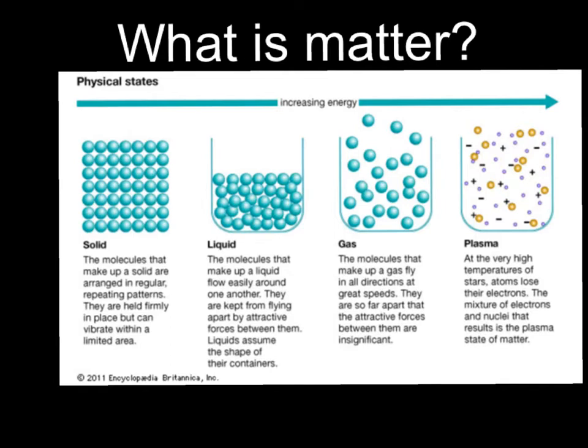Solids are held firmly in place and they vibrate in place. Solids have a fixed shape and a fixed volume. Liquids have molecules that have a little bit of extra space in between. They're not as compact and they're definitely not in a repeating regular pattern like solids. Liquids have a definite volume but they do not have a definite shape. Instead, they take the shape of their container. Gases have lots of empty space in between them and they fly in all different directions and different speeds.